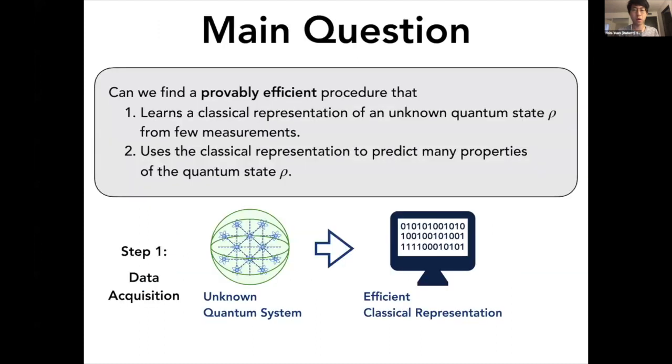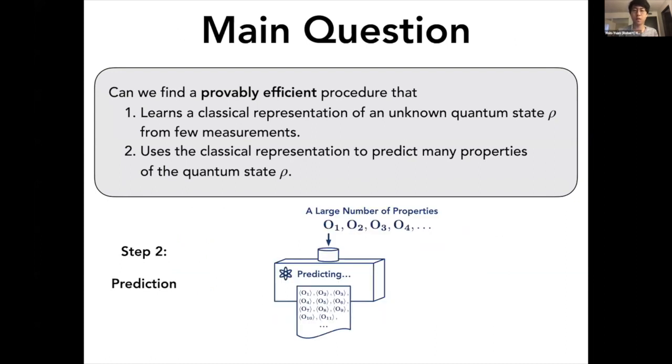So in this work, we are hoping to combine these two recent approaches. And we pose the following question: Can we find a provably efficient procedure that first learned this classical representation of an unknown quantum state from very few measurements? And subsequently, this classical representation allows you to predict a large number of properties of the underlying unknown quantum state.